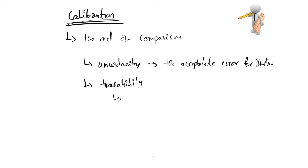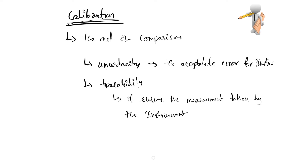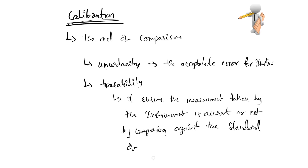Traceability ensures that the measurement taken by the instrument is accurate or not, by comparing it with a standard of high accuracy measurements. So this is what traceability means. This is all about metrology and calibration.